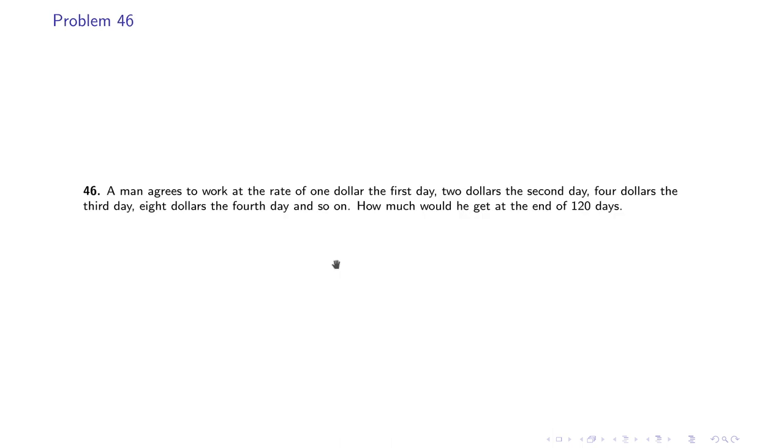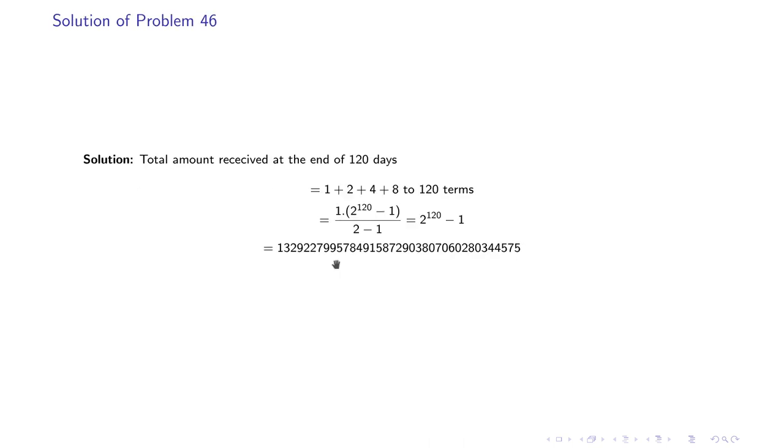Problem number 46 says that a man agrees to work at the rate of $1 the first day, $2 the second day, $4 the third day, $8 the fourth day and so on. How much would he get at the end of 120 days? So the total amount received would be 1 + 2 + 4 + 8 up to 120 terms. So we substitute the values and we get a really large number here, which I would rather implore you not to read because it is just really a large number. Very large, actually.